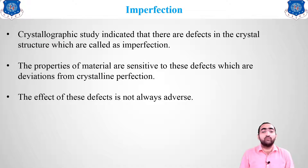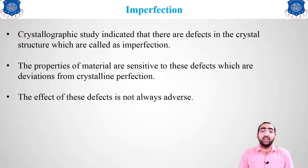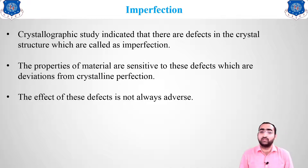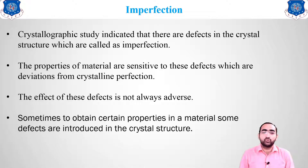The effect of defects is not always adverse. Sometimes they are also helpful for obtaining certain types of properties. For example, adding an impurity like copper in gold increases the strength of gold. So imperfections are not always adverse — they are majorly adverse but sometimes also give beneficial effects, either increasing or decreasing the properties of the material.